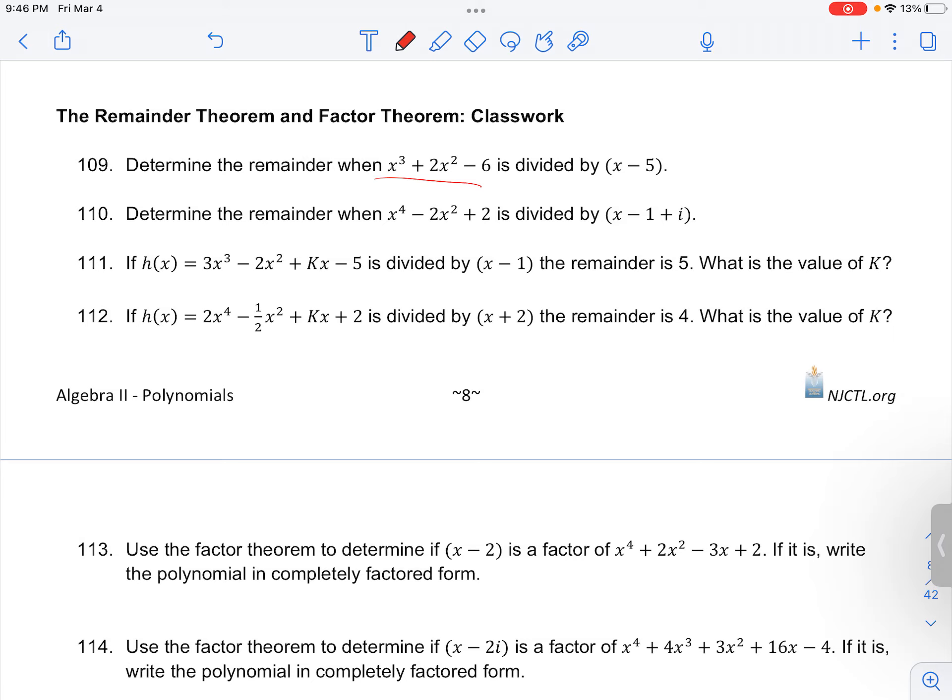We apply the remainder theorem. Our remainder will equal this function, which I'll call f(x), evaluated at the zero of the divisor. The zero of the divisor is when we set x minus 5 equals zero, which gives us x equals 5. So our remainder is found by plugging 5 into the function.